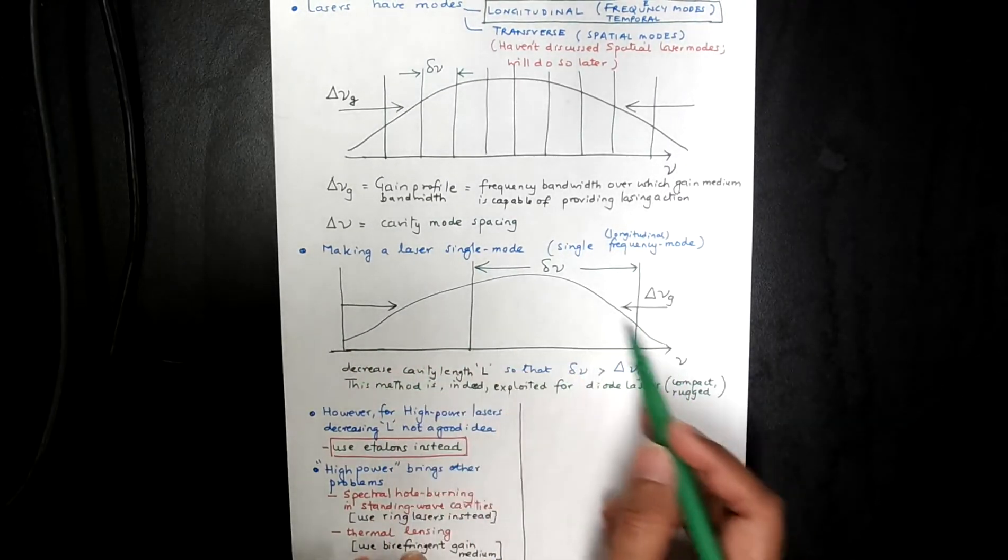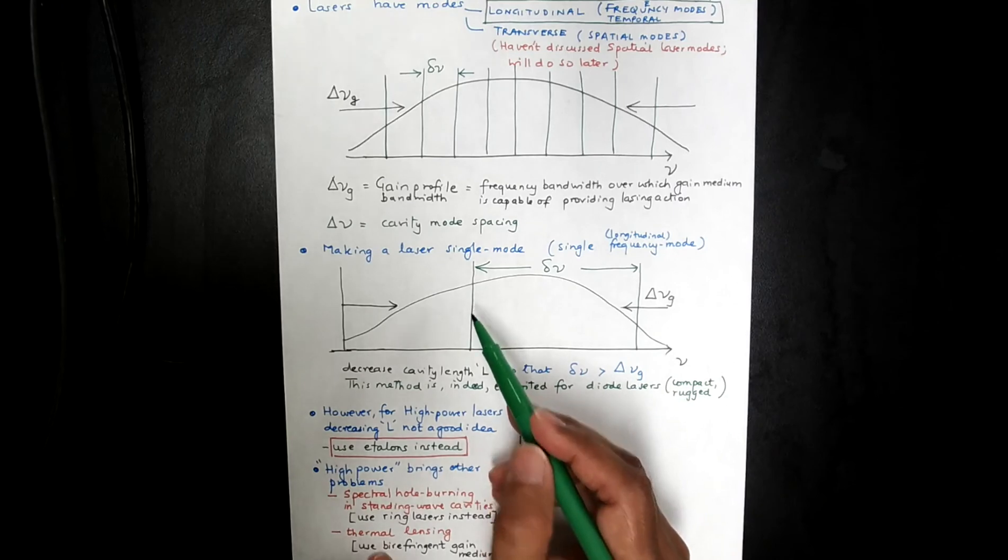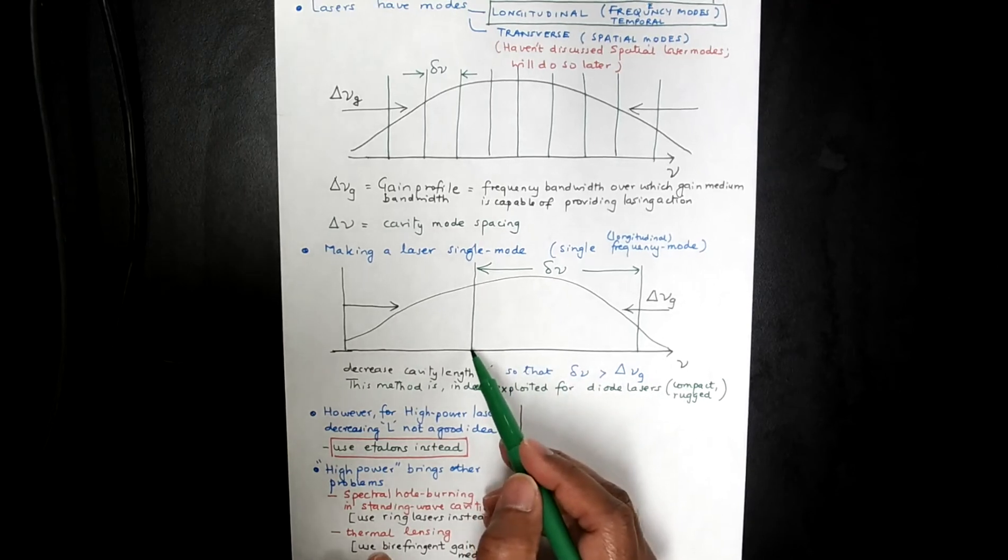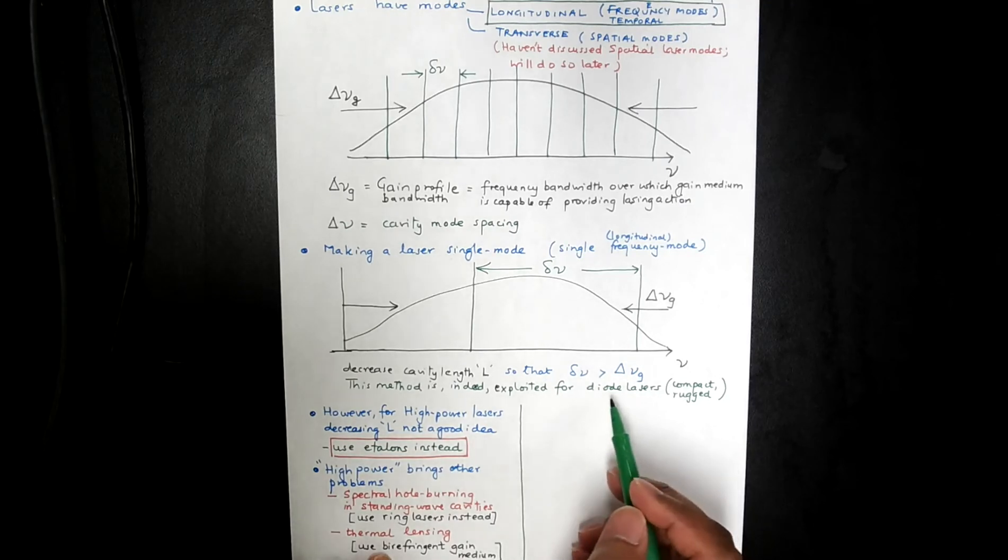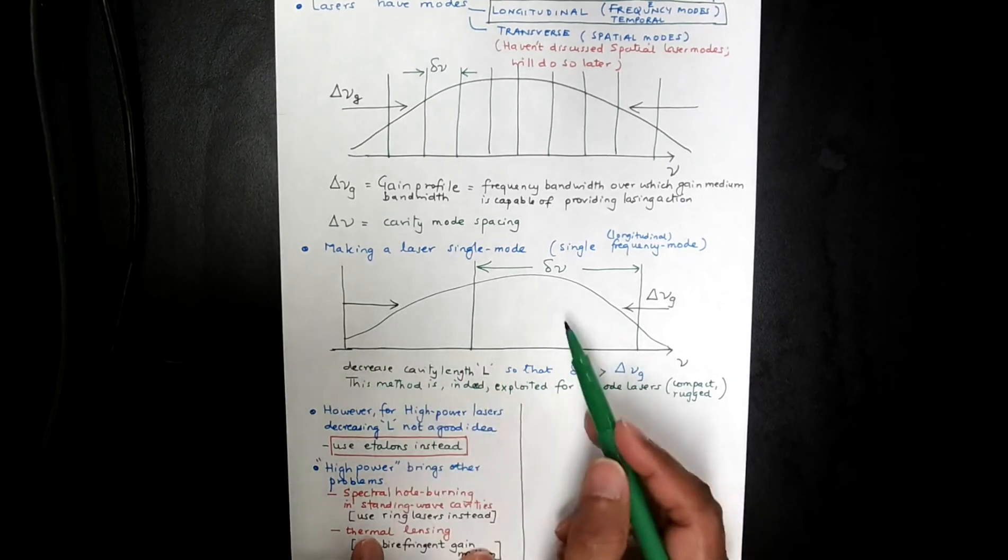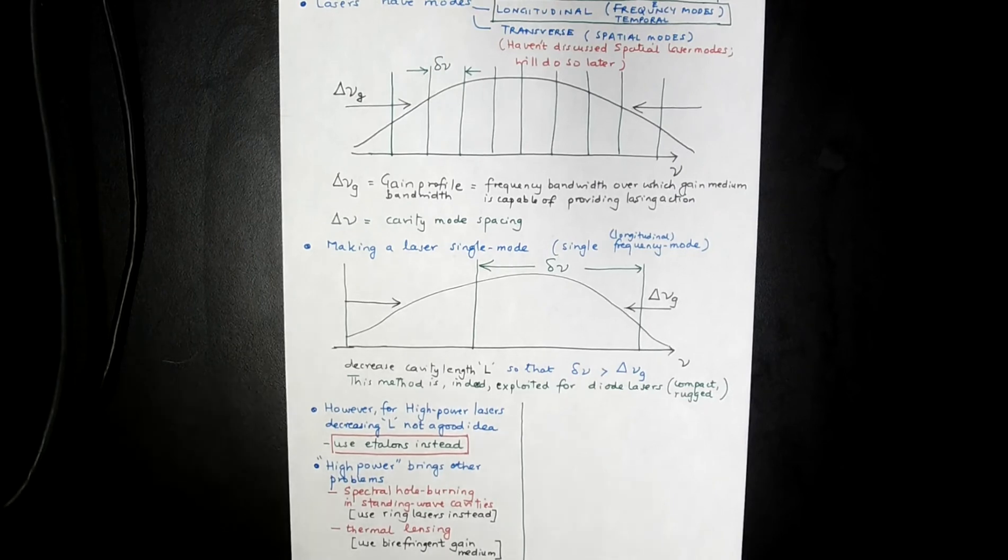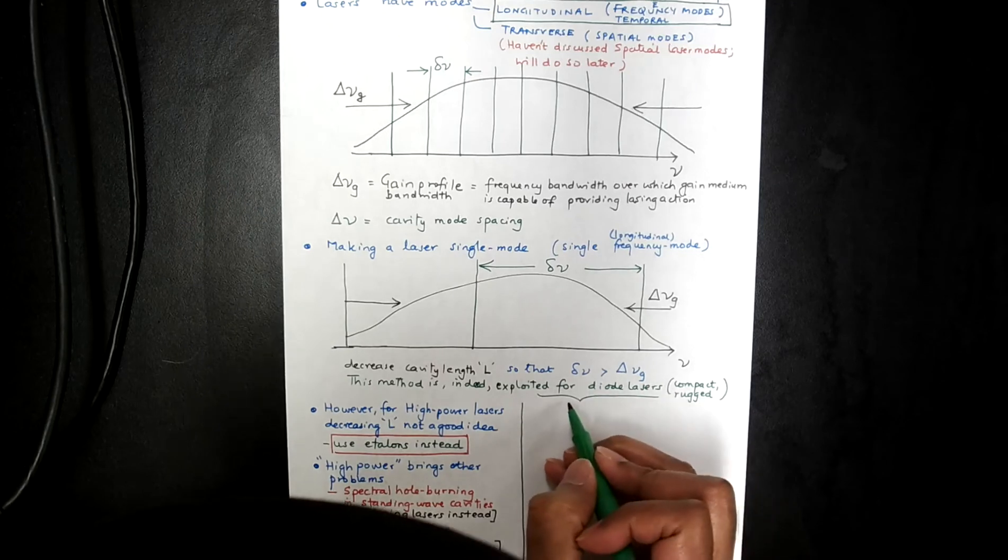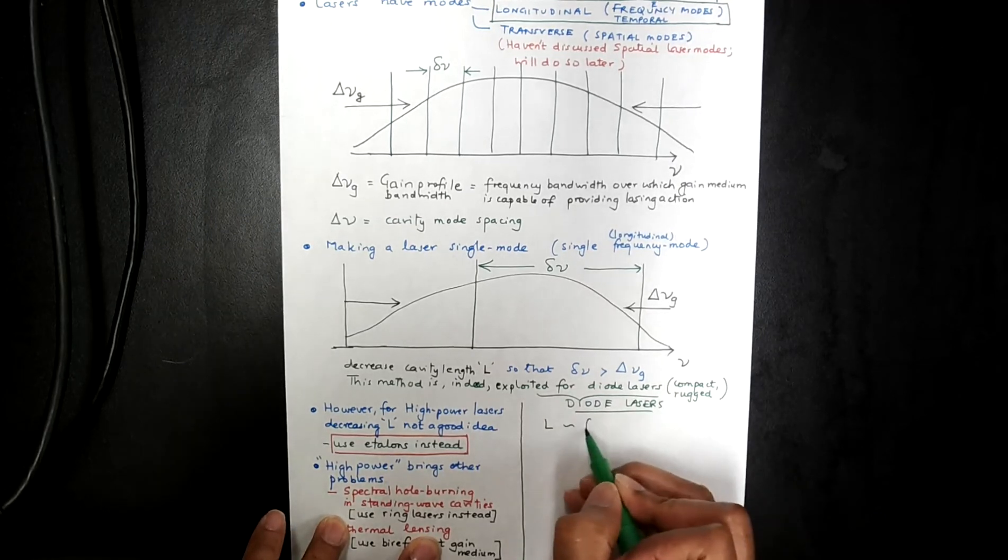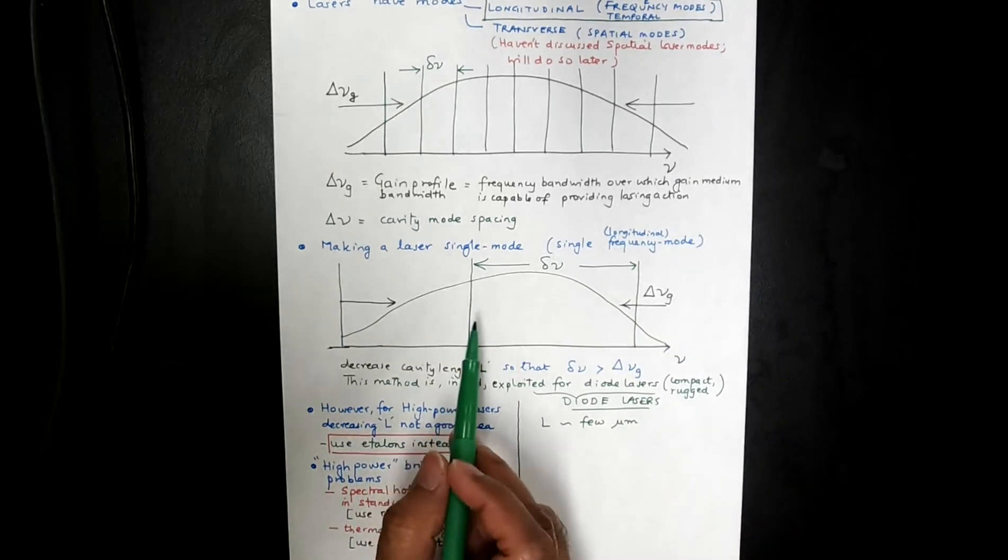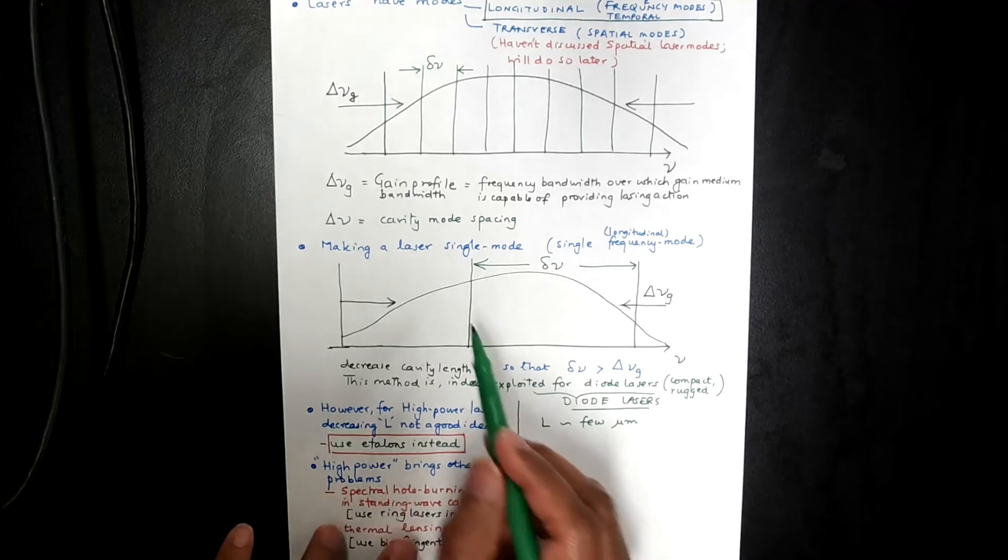So the thing that I want to discuss with you now is that in a diode laser, if I use this method, so my L is tiny, right? L, the length of the cavity will tend to be just a few microns or so. So indeed, exploited, let's discuss diode lasers here. The L is on the order of a few microns. And so, yes, you've made it only one of these modes is lasing, but here's what we haven't discussed so far. What is the width of this line? So I mean, the line has some width, right?